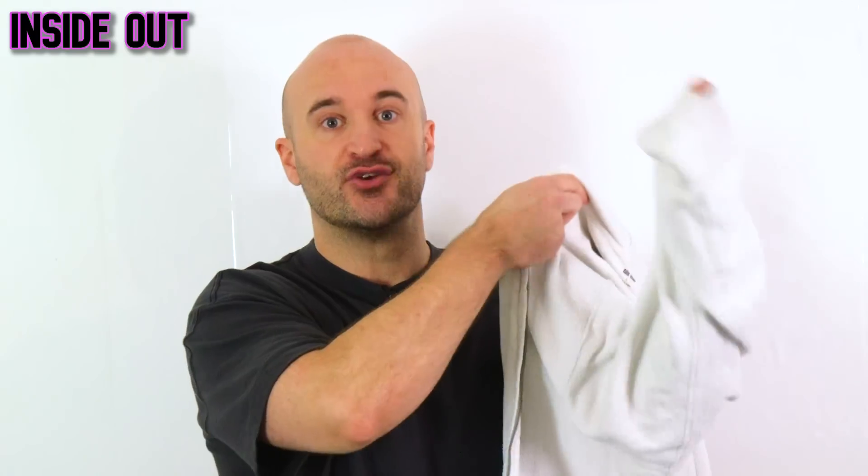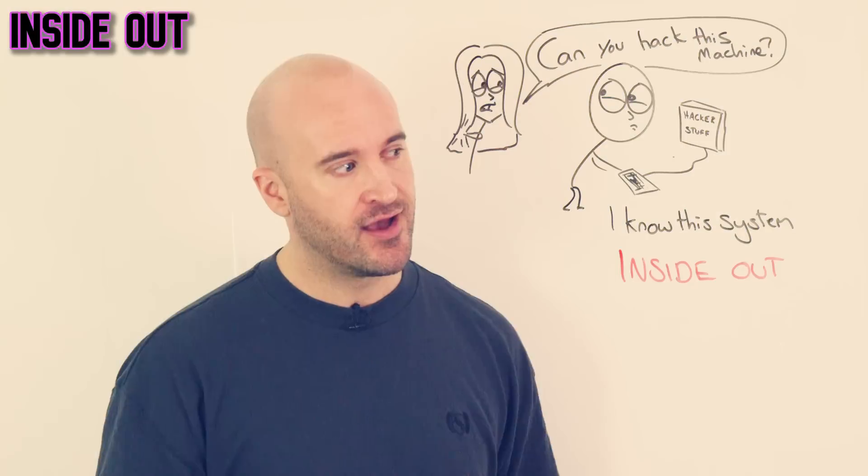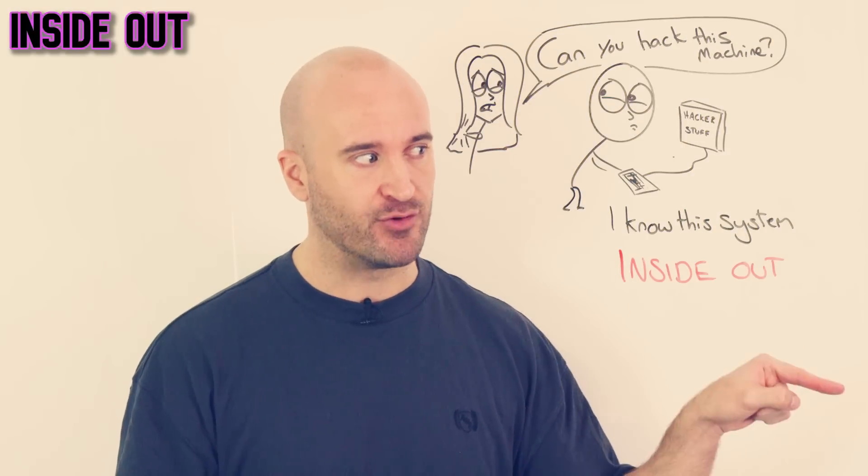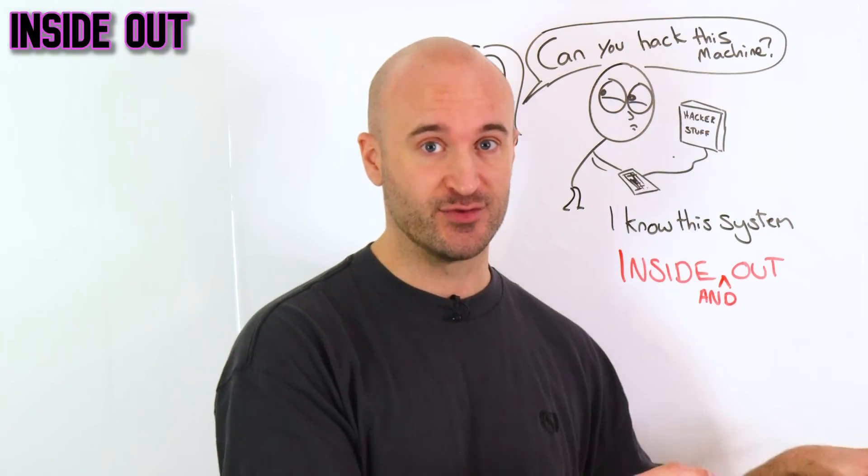The same with inside out. Again, literally you're saying the inside is on the outside, but we also use inside out to say I know every detail about this thing or this person. For example, I know this system inside out. You could also say inside and out.